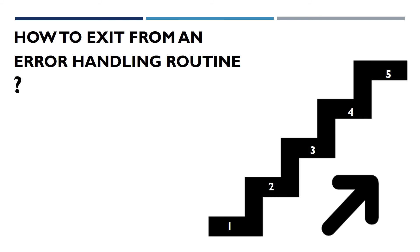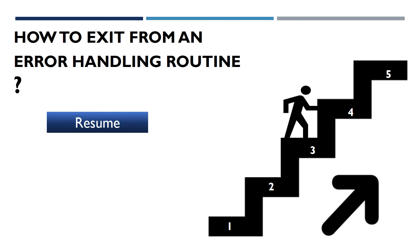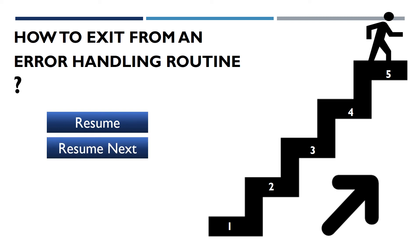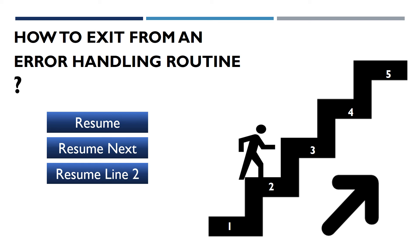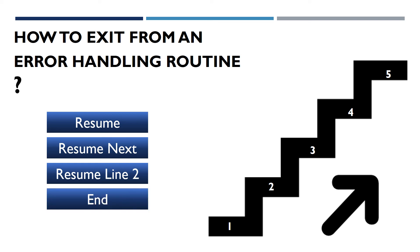Now your error is fixed. How do you exit from an error handling routine? You have four options: you can use RESUME to start from the same step where the error occurred; RESUME NEXT to continue from the next step after the error; RESUME line number to start from a specific line number; or you can simply end the program by writing END.